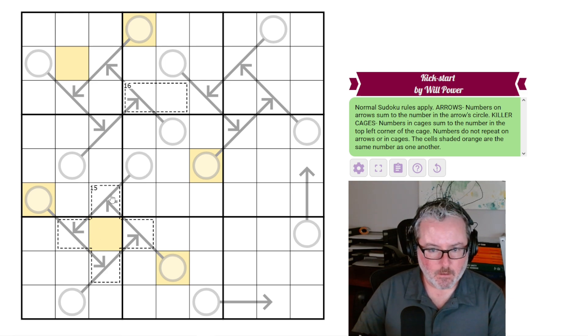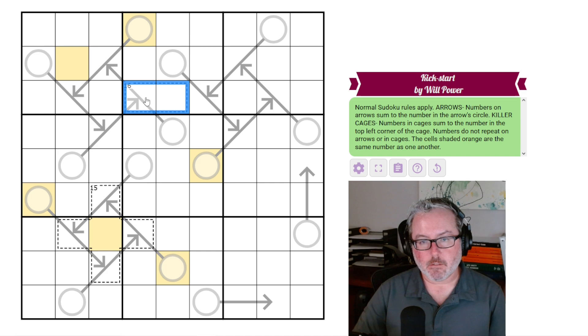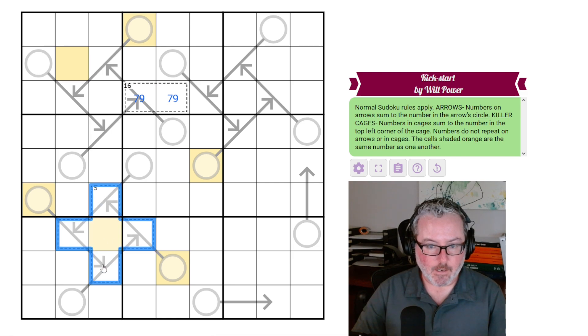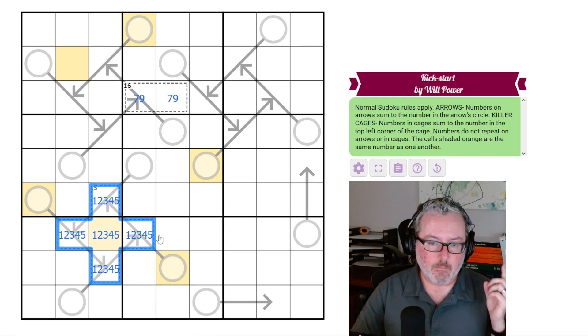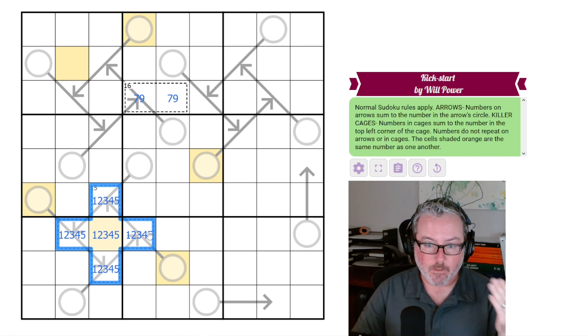The first thing I saw were these killer cages that seem like they're going to be quite useful because we've got a five cell 15 cage, and we've got a two cell 16. Well, there's only one option for both of these. The 16 must be nine, seven. The five cell 15 must be one, two, three, four, and five because that's the bare minimum. So you add up one, two, three, four, and five, you get 15. Therefore it must be.